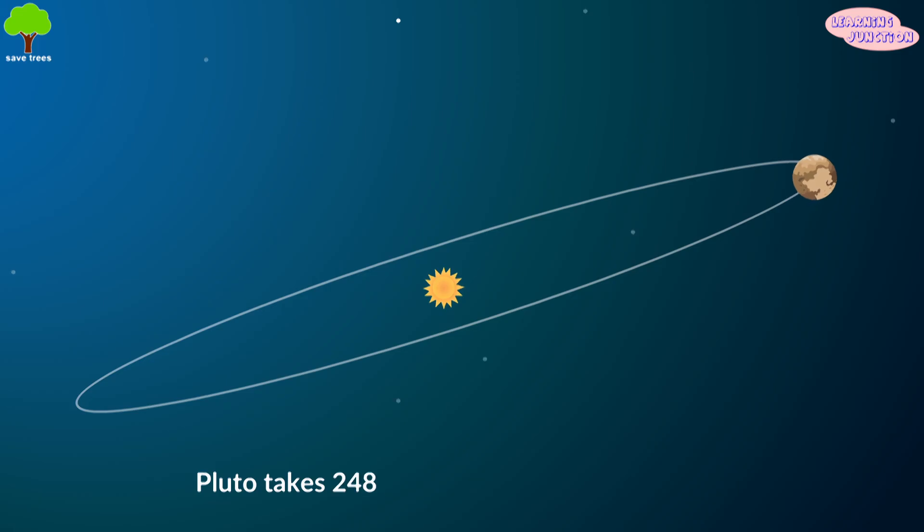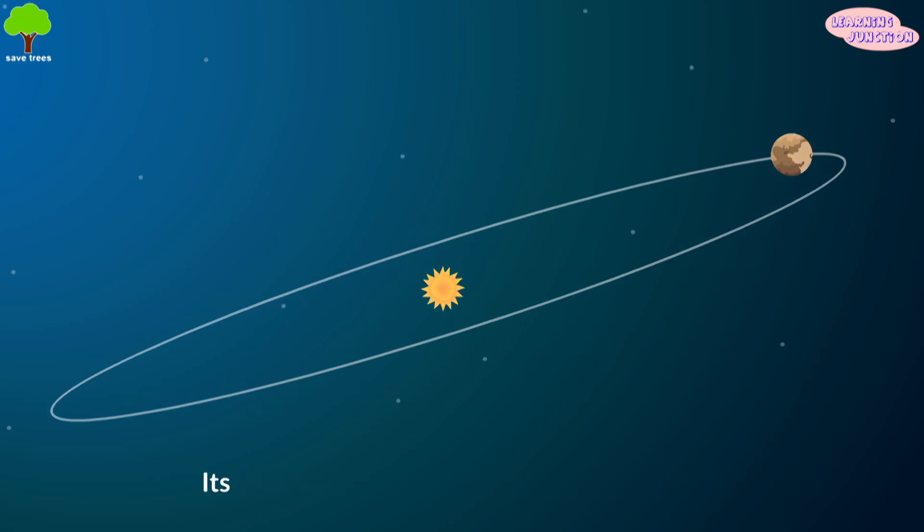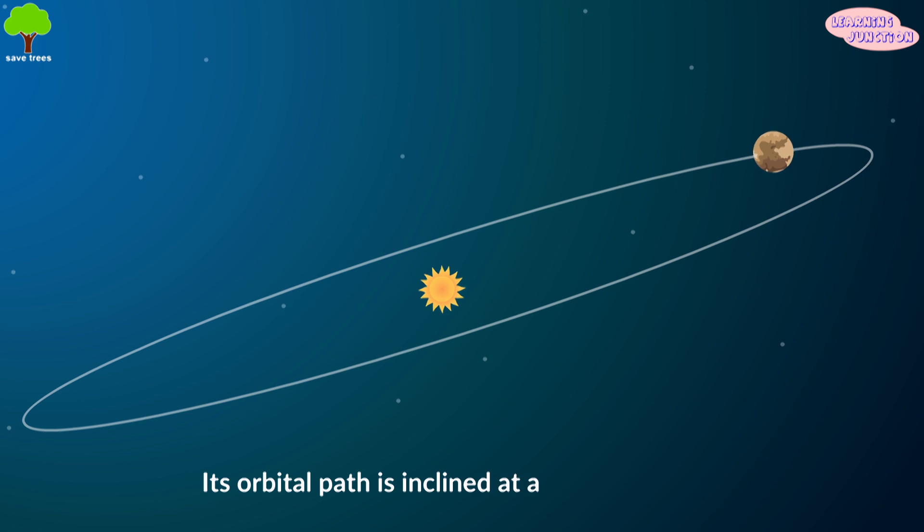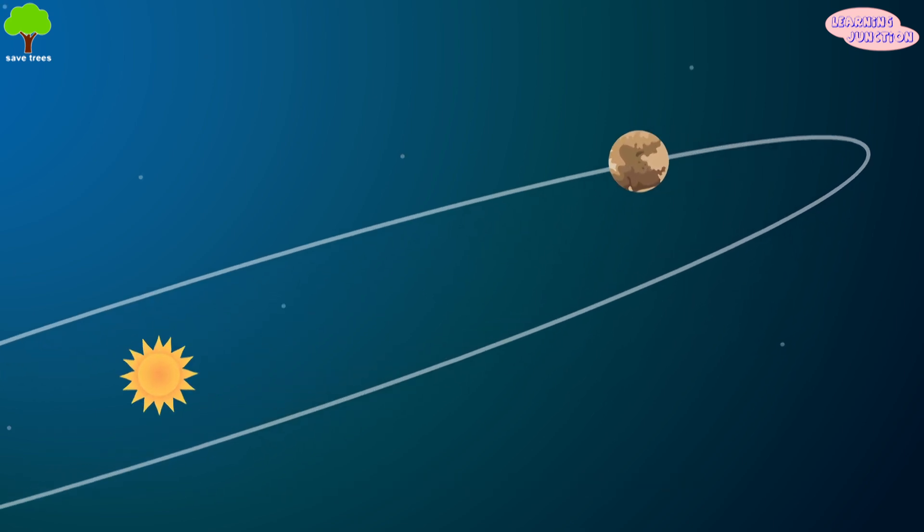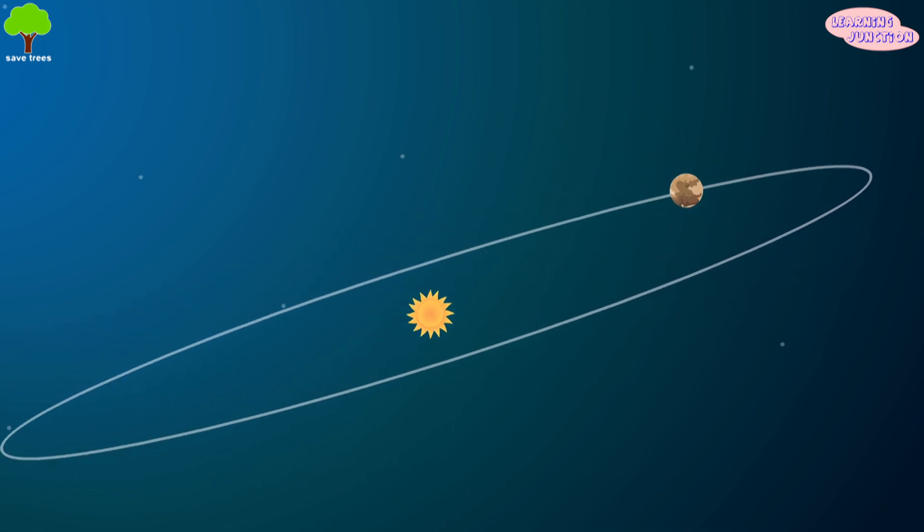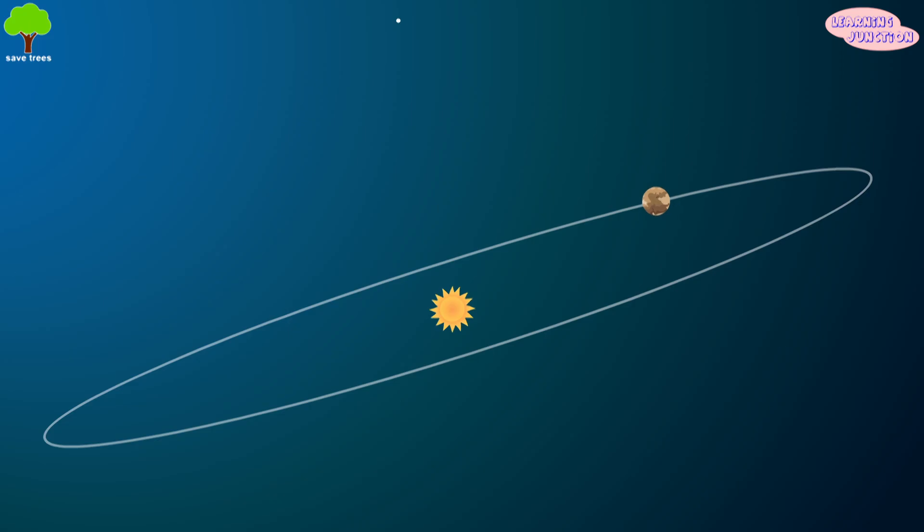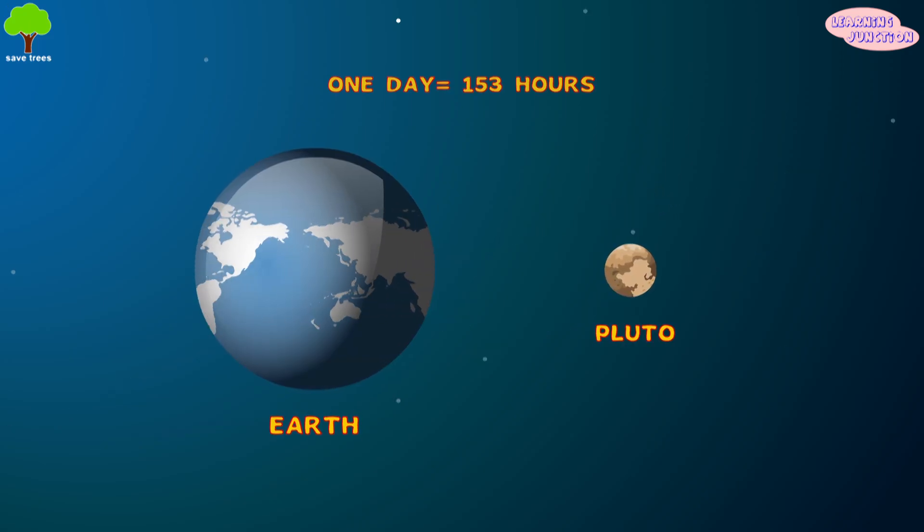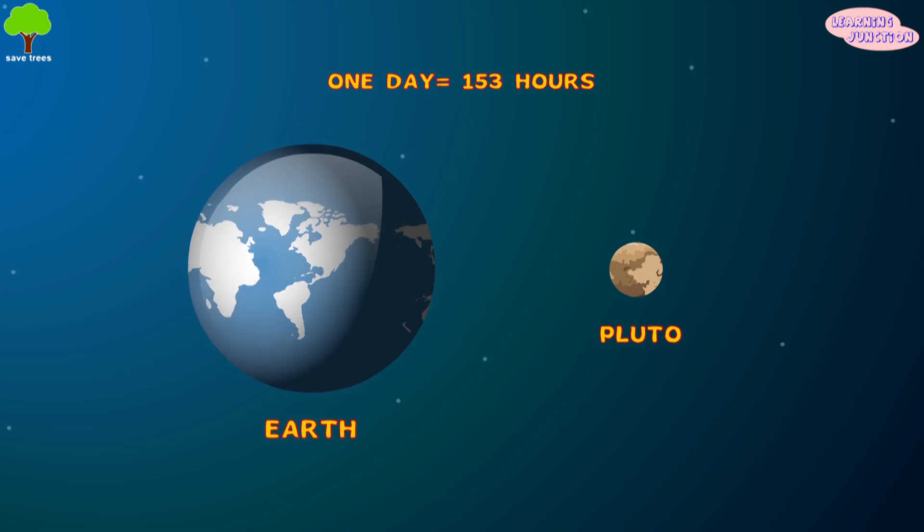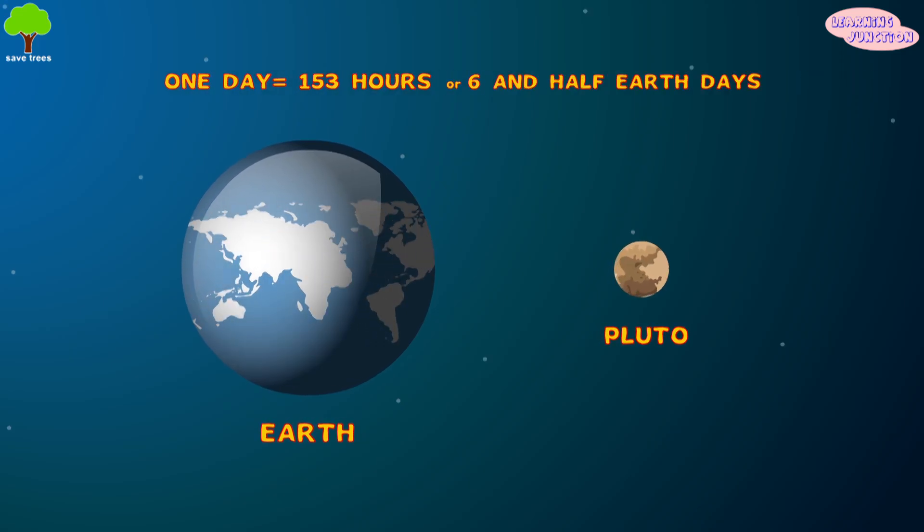Pluto takes 248 years to orbit around the Sun. Its orbital path is inclined at an angle of 17 degrees. It takes much longer to orbit the Sun because it orbits much farther from the Sun than Earth. A day on Pluto lasts 153 hours, or about six and a half Earth days.